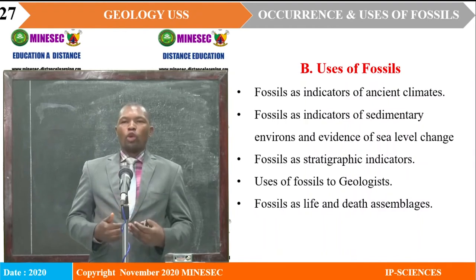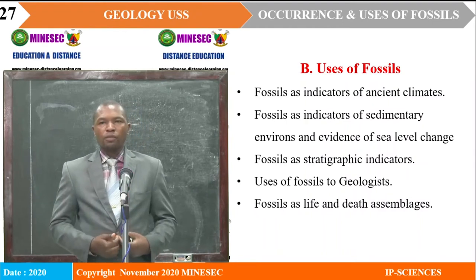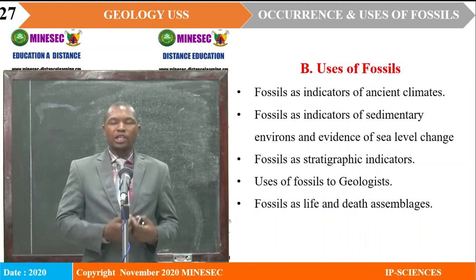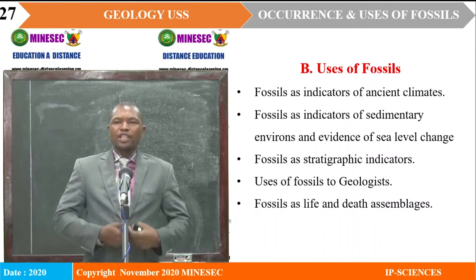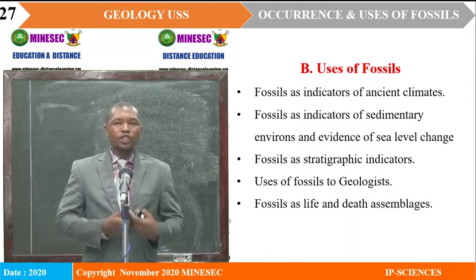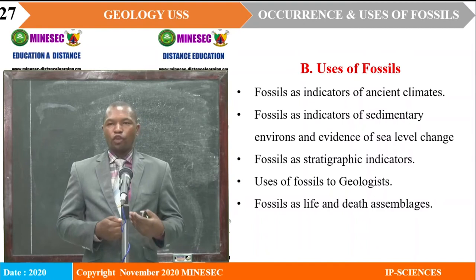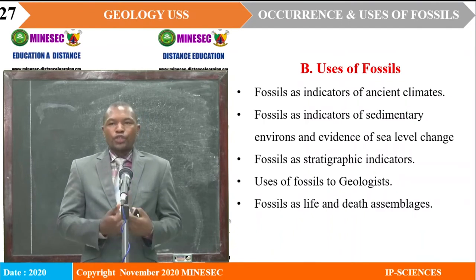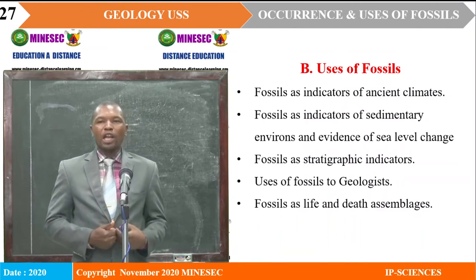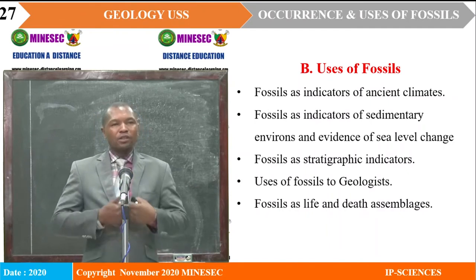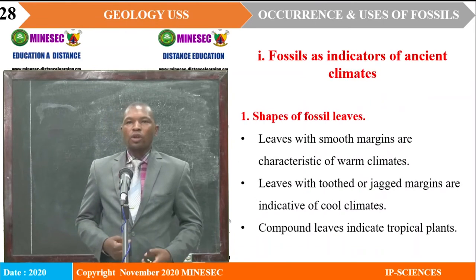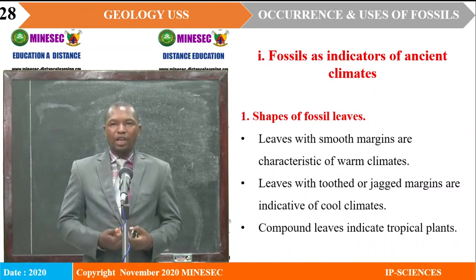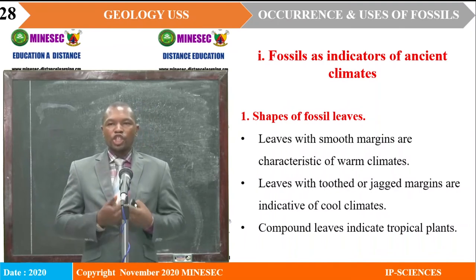The second part of our lesson has to do with the uses of fossils. Fossils are commonly used in five different ways: fossils as indicators of ancient climate (paleoclimate); fossils as indicators of sedimentary environments as well as evidence of sea level changes (sea rise and fall); fossils as stratigraphic indicators; fossils as useful tools to geologists and scientists; and the use of fossils as life and death assemblages. Today, we are going to handle the first use — fossils as indicators of ancient climate.